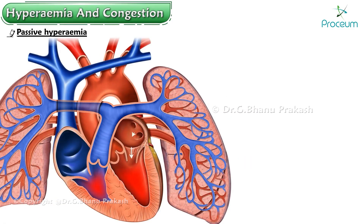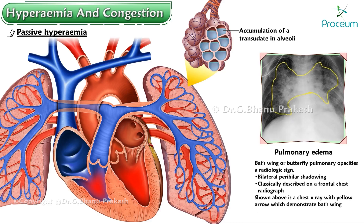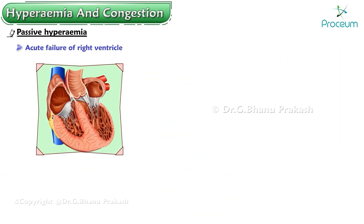Acute passive congestion is clinically a consequence of acute left or right ventricular failure, resulting in venous engorgement of the lungs and leading to accumulation of a transudate in the alveoli, which is called pulmonary edema. With acute failure of the right ventricle, the liver can become severely congested.